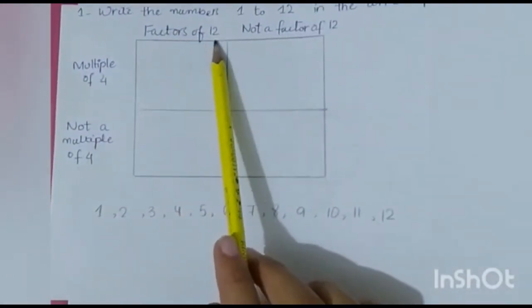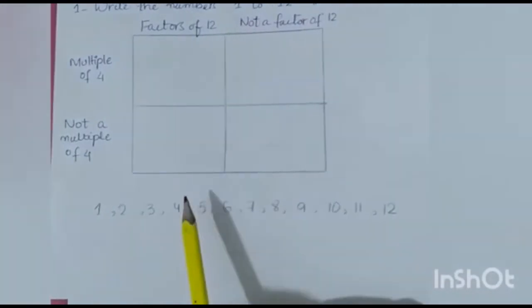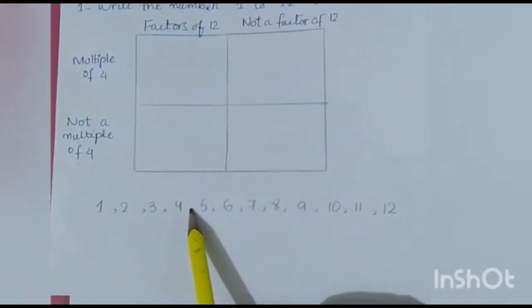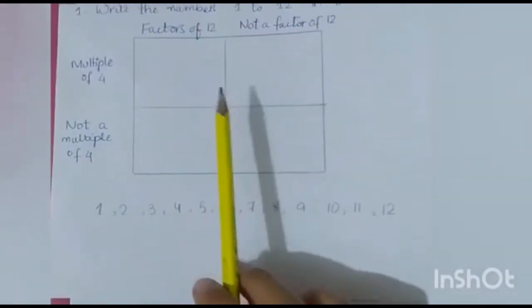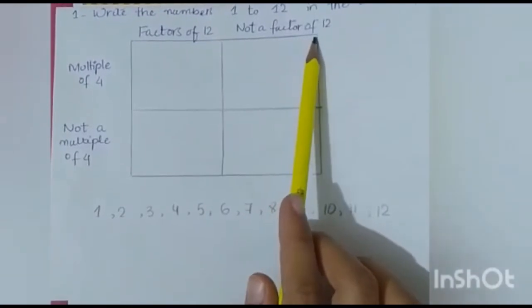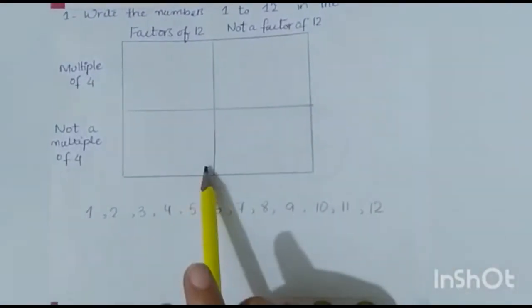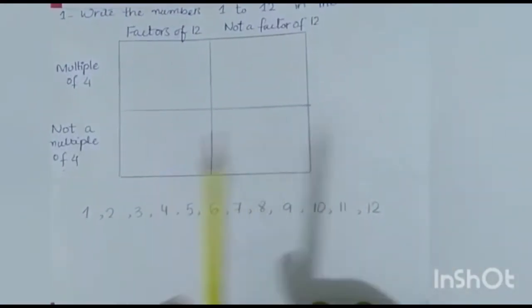Factors of 12 means a number whose table gives 12. Not a factor of 12 means it is not in the table that gives 12.